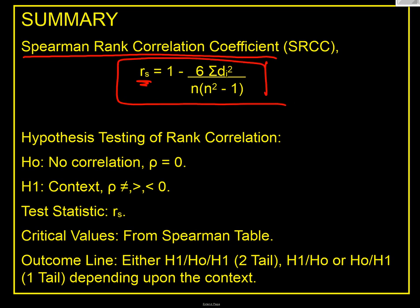You can get it straight out of your calculator as well by just feeding the numbers in to your calculator. Once again, our null hypothesis is that there's no correlation, and therefore ρ equals zero. And for H1, it's context-based, isn't it? ρ is either not equal to, greater than, or less than zero.